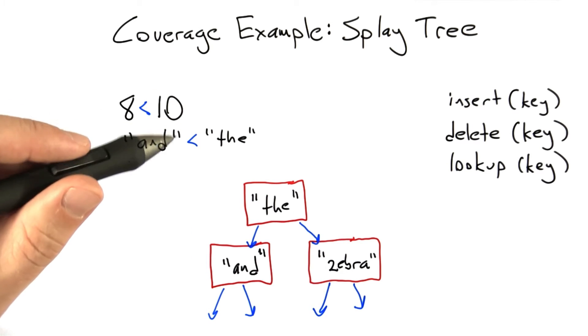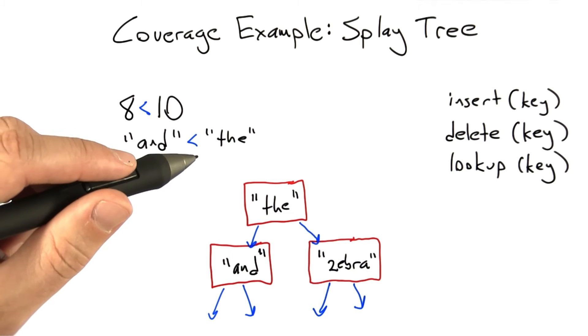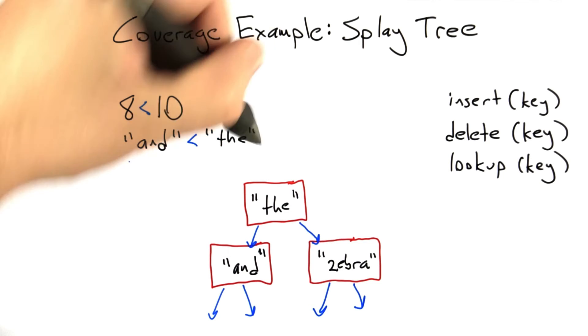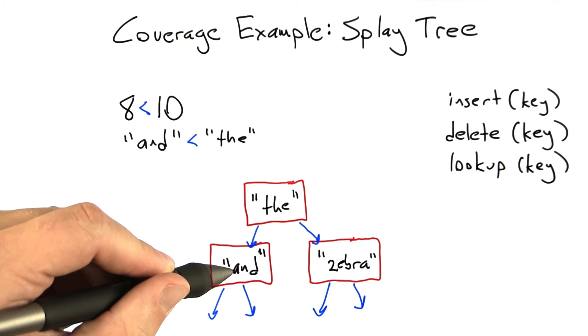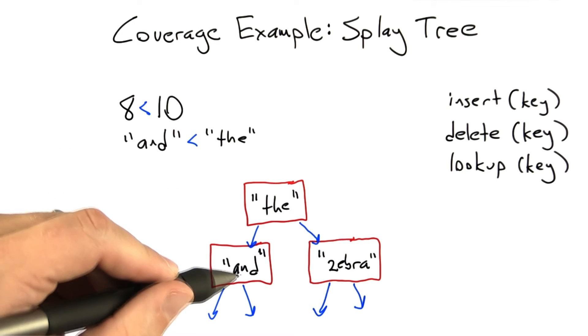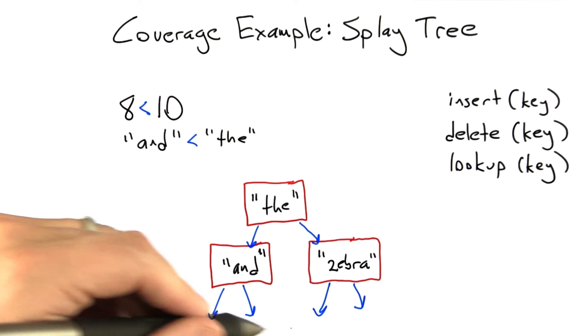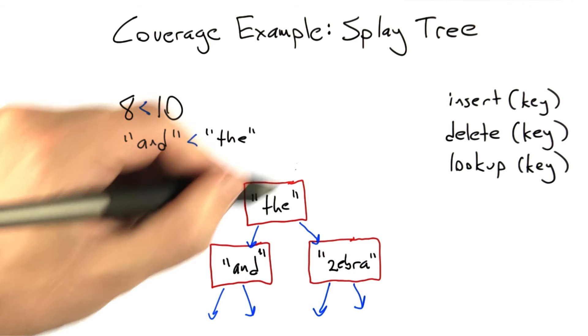And the way that lookup works is when we're searching for a particular key in the binary search tree, we only have to walk one path from the root down to the leaves. We always know which subtree might contain the key that we're looking for, and of course we have to actually go down into that subtree to see if it's there. But the point is we only have to walk one path through the tree.